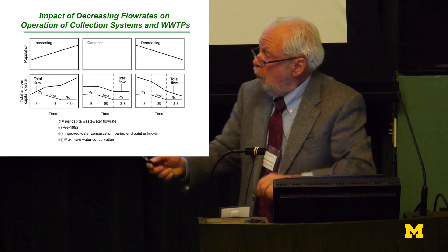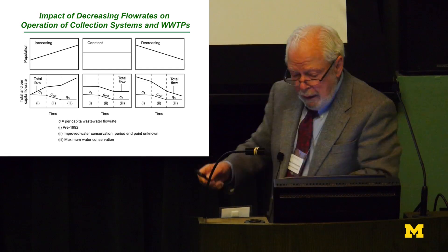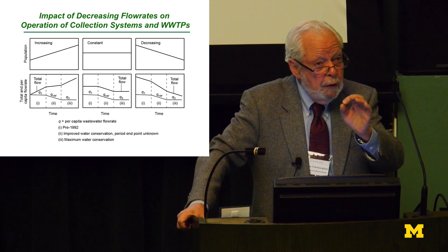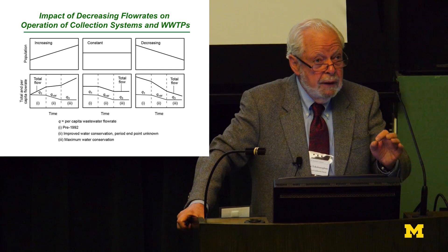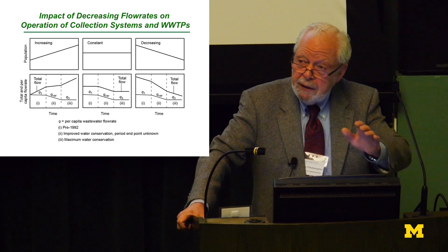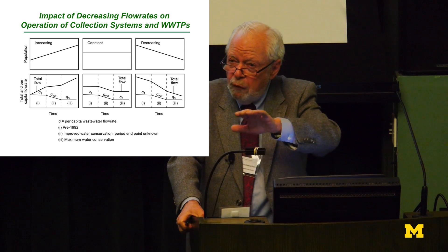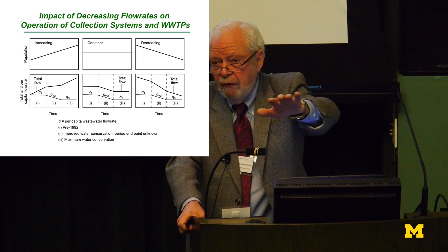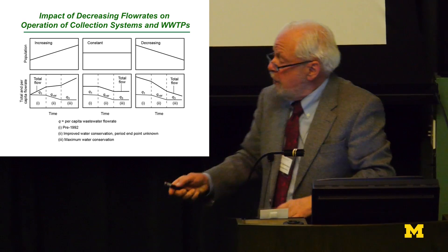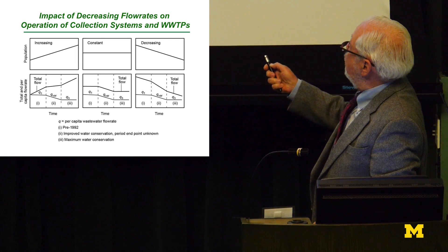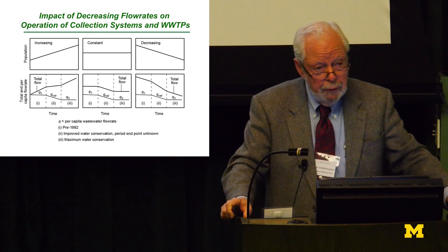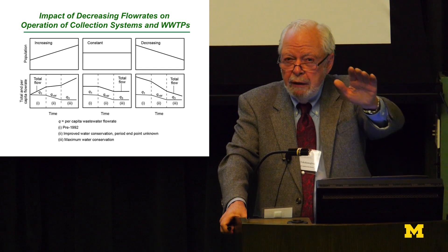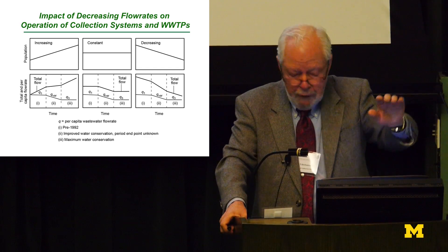We don't know where the second endpoint is going to be. The reason is we don't know how many 40-gallon washing machines with 40-gallon tubs are still out there working. Someday you won't be able to buy a 40-gallon tub — now it's down to 20, and I predict within 10 years it'll be down to five. I estimate the lower number will be about 37 gallons per capita per day. Instead of projecting great increases in flow, we have decreases in flow.